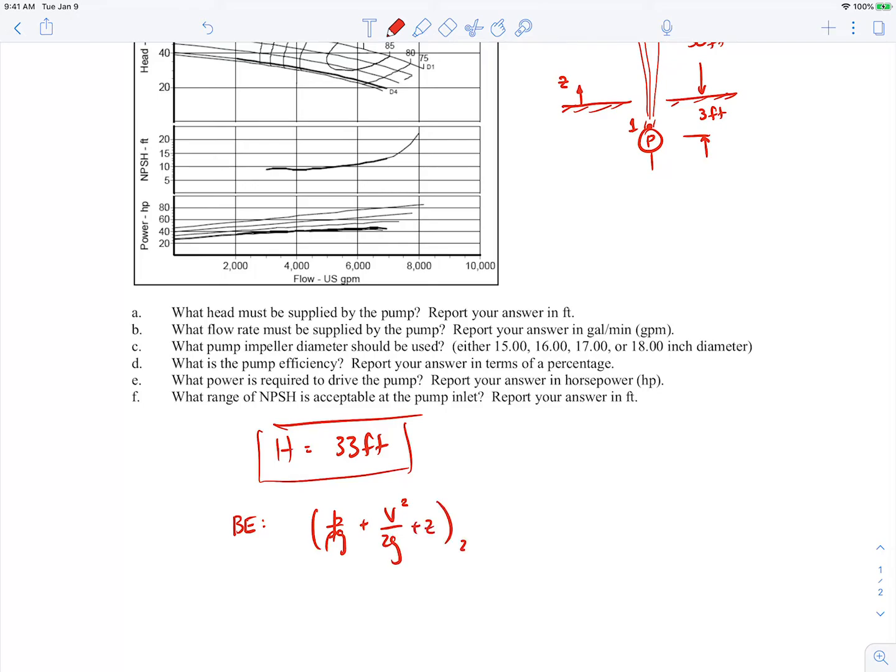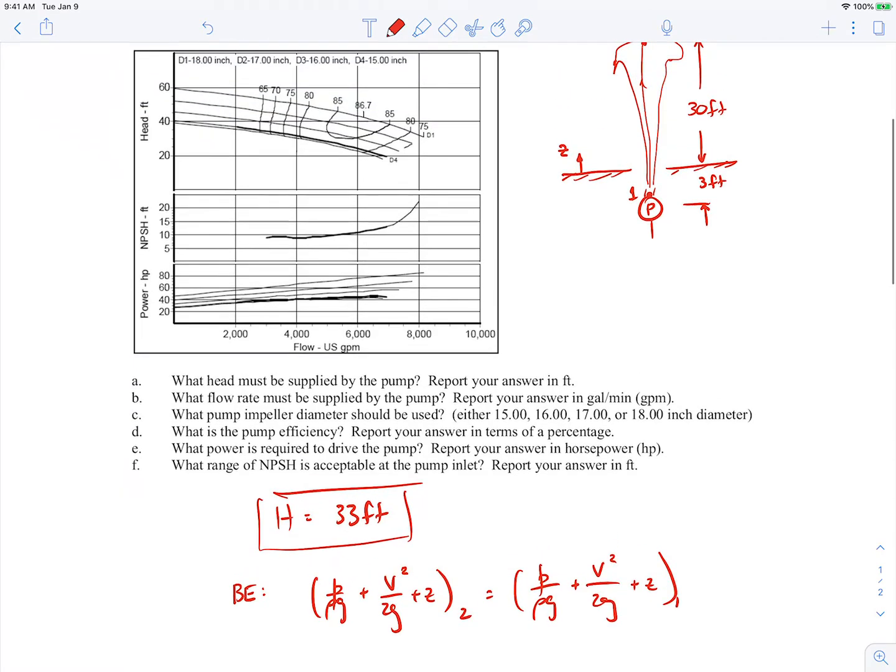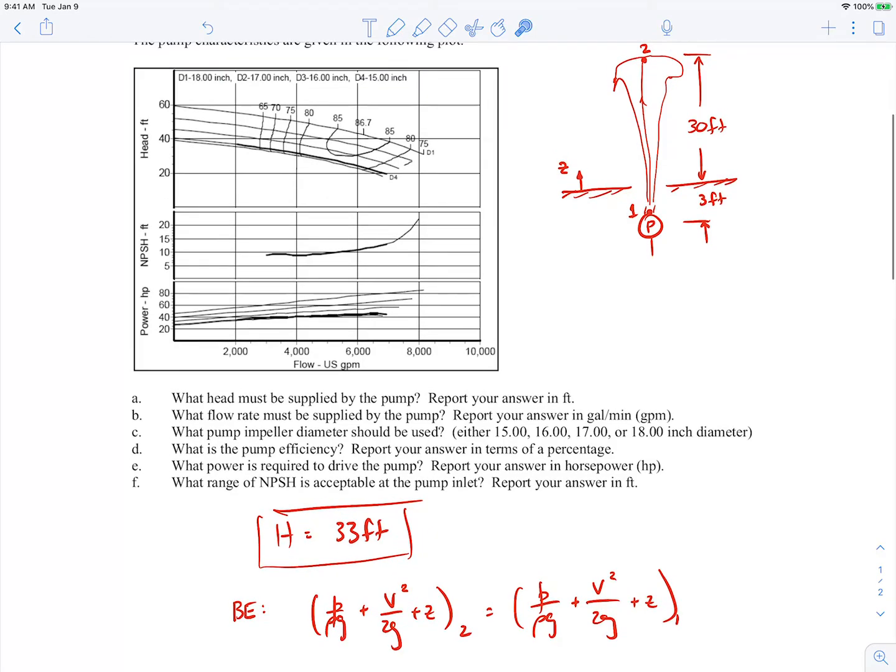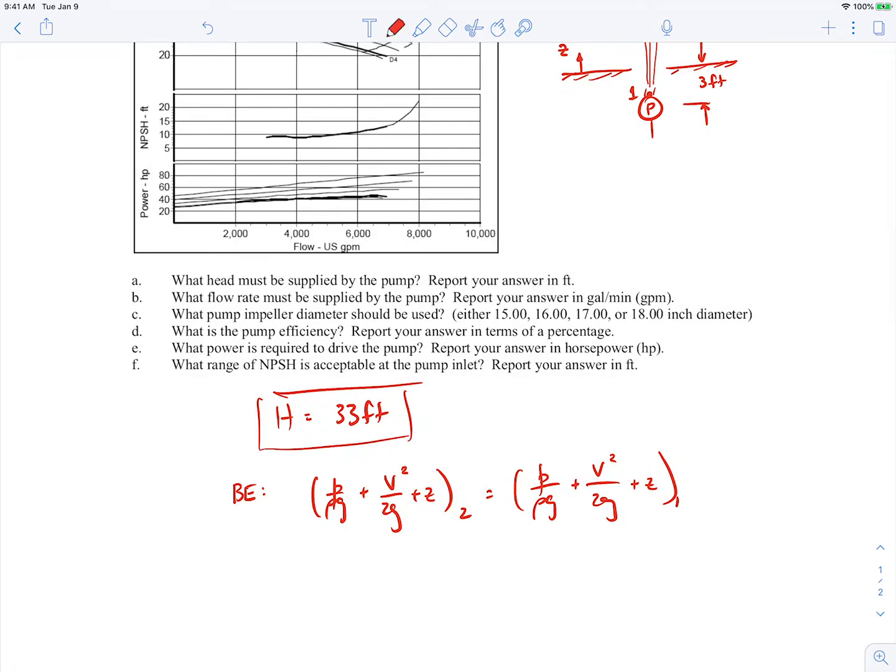We'll write out Bernoulli's equation. Notice that I'm not writing the extended Bernoulli equation, and the reason for that is because this isn't a pipe flow. It's just a regular fountain, so there's no pipe between points one and two. It's just a flow exposed to the air there.